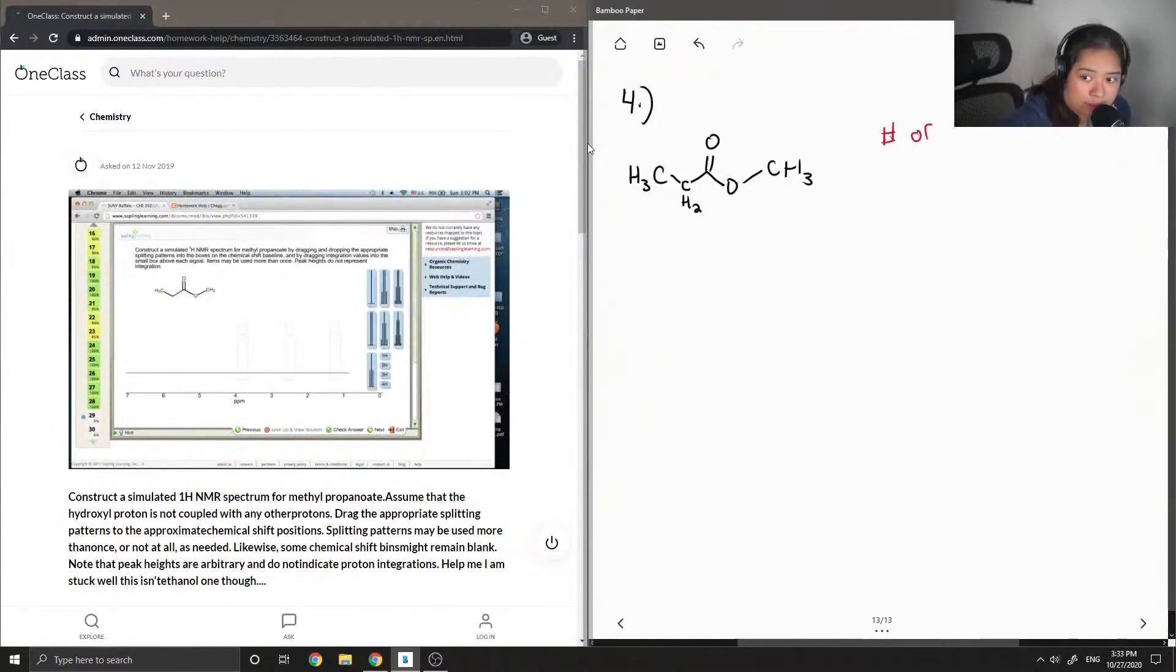So let me write that down. The number of signals that we see is equal to the number of chemically non-equivalent hydrogens.